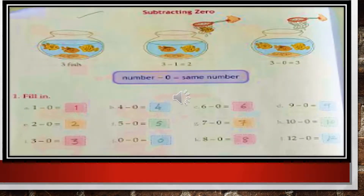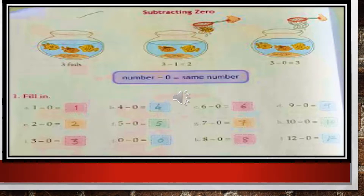One more example is given in your book on page number 24: how to subtract 0. In the first pot, there are 3 fishes. In the second pot, there are 2 fishes because 1 fish has been taken out. So if we minus 1 from 3, it will be 2, which is in the second pot — because 1 fish has been taken out, 2 fishes are remaining. But when we take out 0 fish out of 3, the answer will remain 3. The result is that when we subtract 0 from any digit, the answer remains the same — the digit does not change.